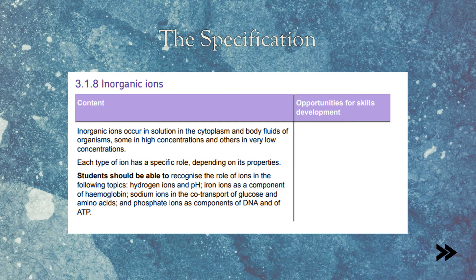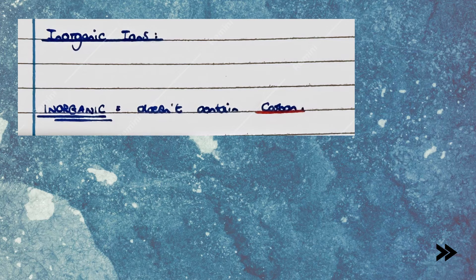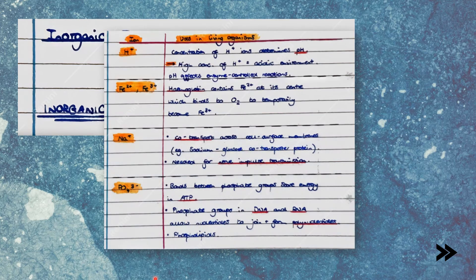Next, we'll move on to inorganic ions. First of all, what does inorganic mean? Well, inorganic means that it does not contain carbon. Let's have a look at some examples of inorganic ions.